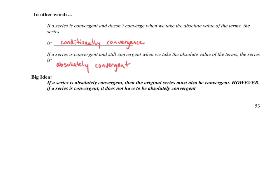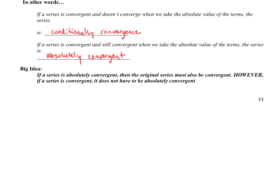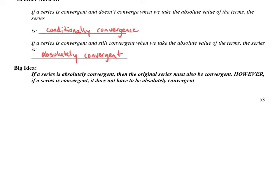If a series is absolutely convergent, then the original series must also be convergent. However, if a series is convergent, it does not have to be absolutely convergent. This test allows us to apply the absolute value and test convergence. If we apply the absolute value and find the series is convergent, that means the original was as well. However, if we apply the absolute value and it diverges, we have to go back and test the original.